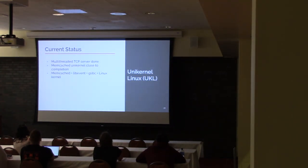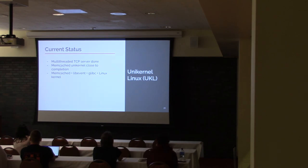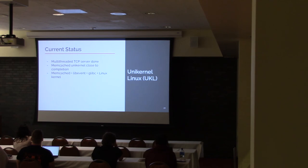As my advisor Ran says, we should not focus too much on these numbers — the main interesting result is that we have an existence proof that it works. We'll do more rigorous performance evaluation later. Current status: we have pthreads working, so we have multithreaded support and a multithreaded TCP server running. We're now trying to run memcached as a unikernel, which is very close to completion — it's currently failing because somewhere in the code there's a syscall we haven't changed yet. The cool thing is that memcached, libevent, glibc, and the Linux kernel are all linked together and the kernel boots up and goes into the memcached code.